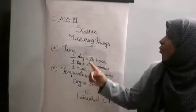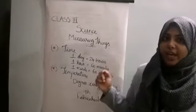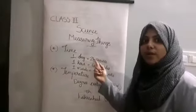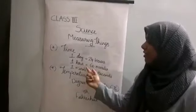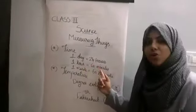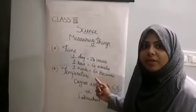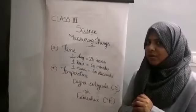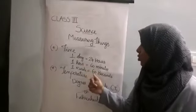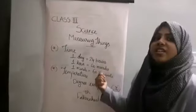One day is equal to 24 hours. One hour is equal to 60 minutes. One minute is equal to 60 seconds.